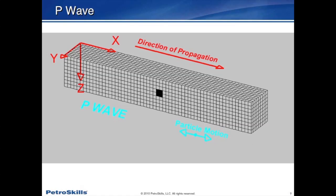We generally deal with two types of waves in our industry: P waves and S waves. P waves are sometimes referred to as compressional waves. The particle motion is traveling along the same path as the wave — if the wave is moving in this direction, the particle motion is moving in that direction. P waves tend to be the fastest of the two wave types. They also have some unique properties in that the wave gives us physical properties of both the fluid and the rock itself.